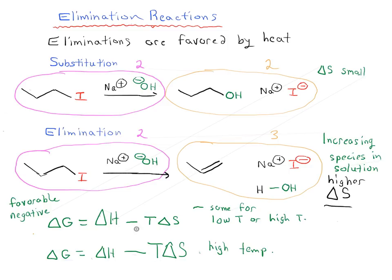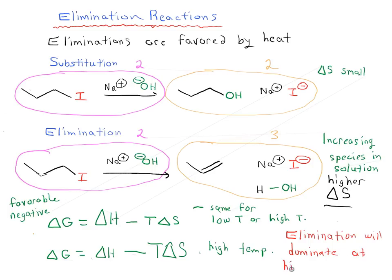At high temperatures, this large T delta S term can start to lead to a delta G which is going to be lower — more negative — than the delta G for substitution. So as we increase the temperature, elimination is going to have a more and more negative delta G compared to the delta G for substitution, which remains roughly the same at low or high temperature. Increasing the temperature makes delta G more negative relative to substitution, and eventually elimination will dominate at high temperatures.